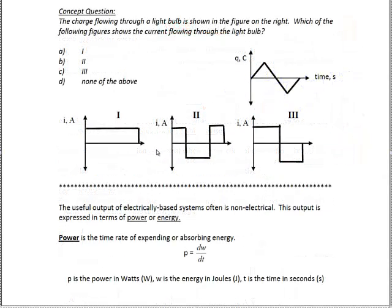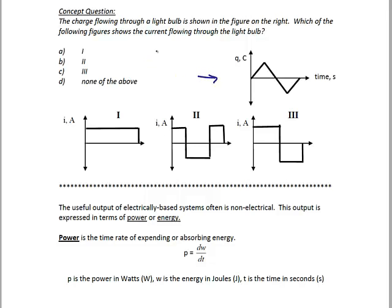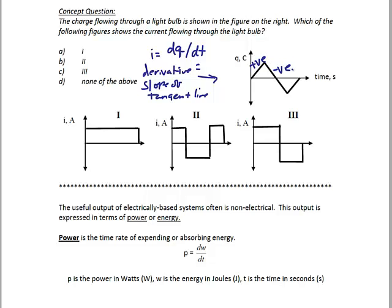Now let's try another concept question related to charge and current. The charge flowing through a light bulb is shown in the figure on the right. Which of the following figures shows the current flowing through the bulb? Remember, the relationship between charge and current is I equals dq/dt. Since we don't have any numbers, we can't find the exact derivative, but we know that the derivative of a waveform equals the slope of the tangent line. We can find the approximate slope for each piecewise linear segment: the first line has a positive slope, the second has a negative slope, and the third has a positive slope.